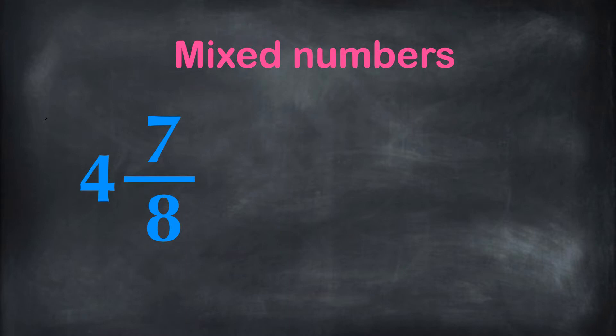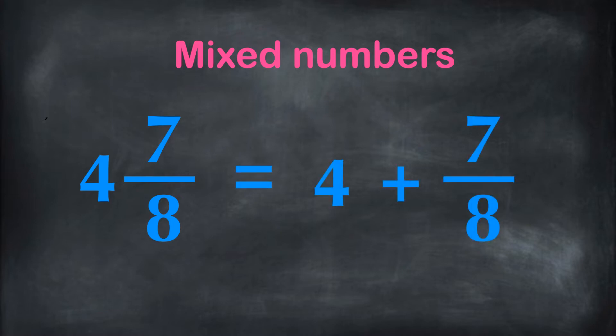Here we have a mixed number 4 and 7 eighths. The mixed number 4 and 7 eighths is the same as 4 plus 7 eighths.